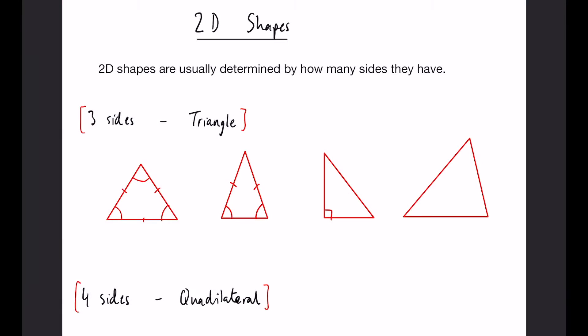In this video we're going to be looking at 2D shapes and all the different types of 2D shapes that you're going to need to know about for your GCSE maths. 2D shapes are normally determined by how many sides they have.